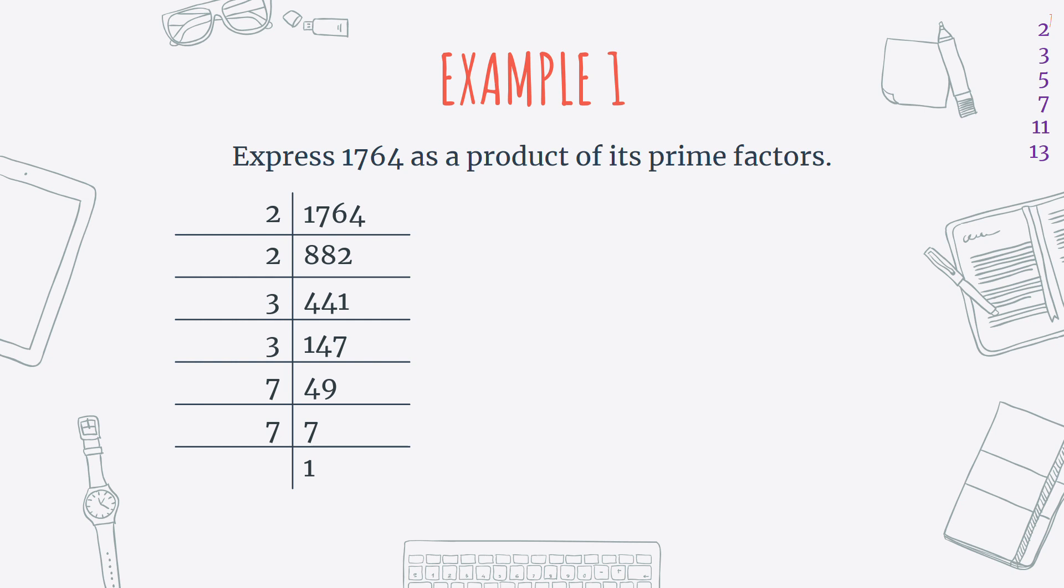Once you reach 1, you've finished with your ladder. All these numbers on the left, these would be the prime factors. So if I say 2 times 2 times 3 times 3 times 7 times 7, I get 1764. And this is how you write your answer. So you're going to write 1764 is equal to 2 times 2 times 3 times 3 times 7 times 7. And then notice that I've put them in ascending order, so smallest to biggest. And then I can simplify it. So I can say, well, 2 times 2 is the same as 2 squared. 3 times 3 is the same as 3 squared. And 7 times 7 is the same as 7 squared. So I can rewrite it like this. And that would be your answer. So you need to show your working out using the ladder. And then you need to write the final answer. 1764 is equal to whatever the prime factors you found were.